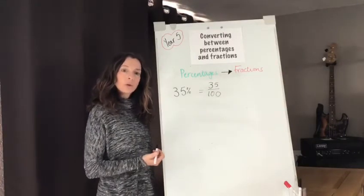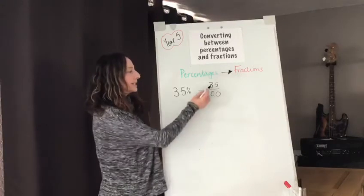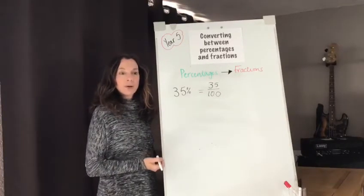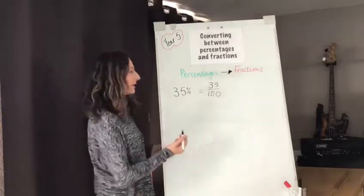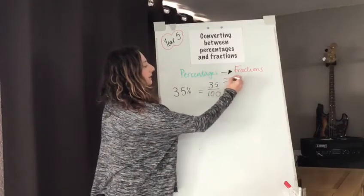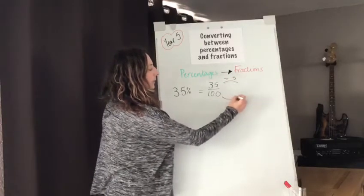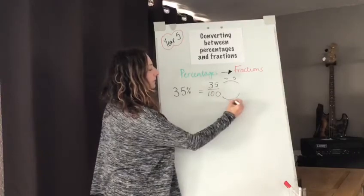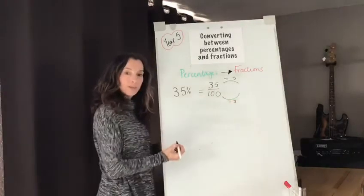So we're going to look for a common factor and we can see straight away that 35 and 100 are both divisible by 5. So we are going to divide our numerator by 5 and we're going to divide our denominator by 5 as well using what we know about equivalent fractions.